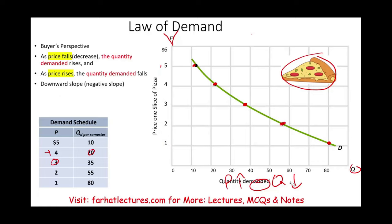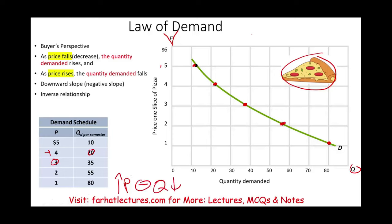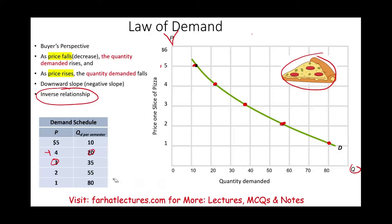This is what I meant by the price and quantity having a negative relationship. When one goes up, the other one goes down; when one goes down, the other one goes up. There's an inverse relationship — and this is an important concept: the law of demand. It's a downward slope, negative slope, inverse relationship between price and quantity.